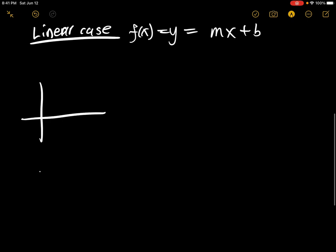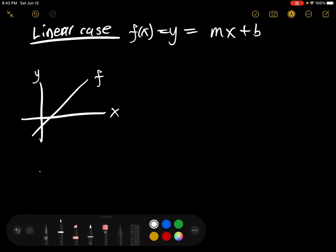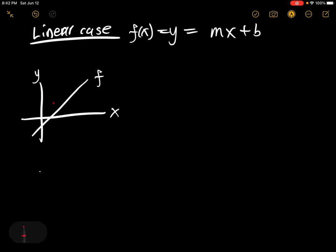As an example, if I create a line and call it f, let's say we have a few data points obtained from a lab or experiment. We say the red points are our data points, and we'll call each data point at its coordinate (x_i, y_i), so that when there's an i subscript we know it's a data point.